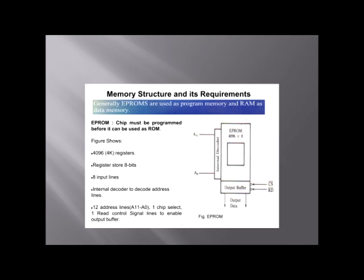Generally, EPROMs are used as program memory and RAM as data memory. An EPROM chip must be programmed before it can be used as ROM. This figure shows it has 4K registers, each storing 8 bits. It has 8 input lines and an internal decoder to decode address lines. It has 12 address lines from A11 to A0, one chip select, and one read control signal line to enable the output buffer.